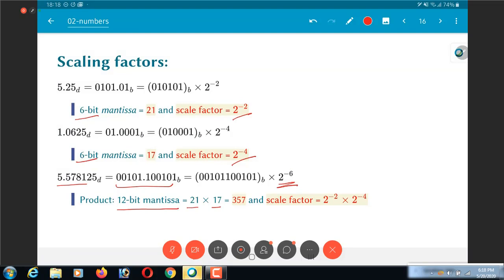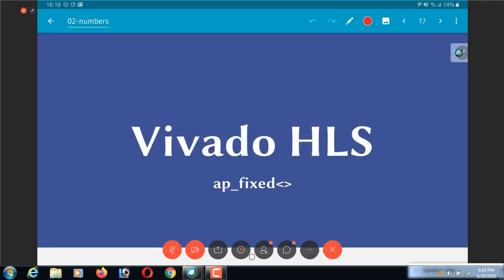Now, which one is it actually supposed to be, how do I know what is the scaling factor? That is where something like Vivado HLS helps us to keep track of that.